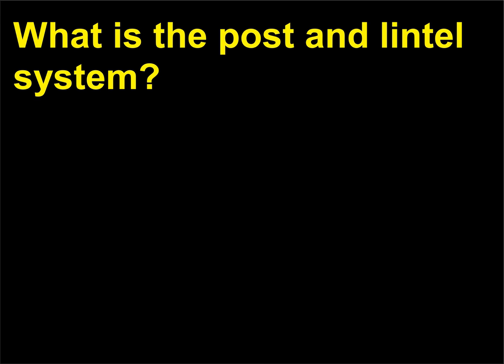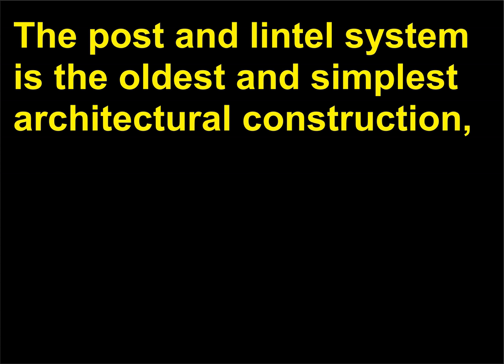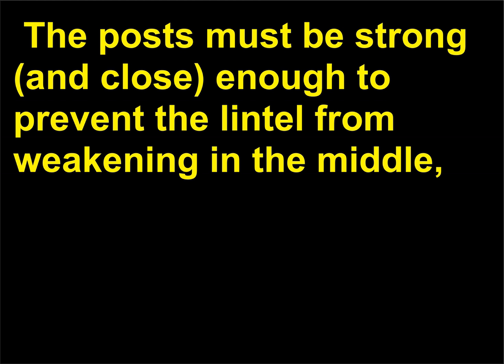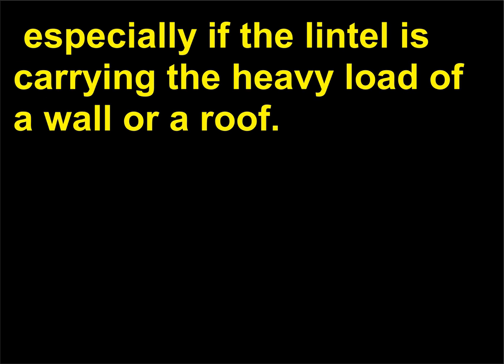What is the post and lintel system? The post and lintel system is the oldest and simplest architectural construction, in which two upright forms called posts support the load of a horizontal beam known as a lintel. The posts must be strong and close enough to prevent the lintel from weakening in the middle, especially if the lintel is carrying the heavy load of a wall or a roof.